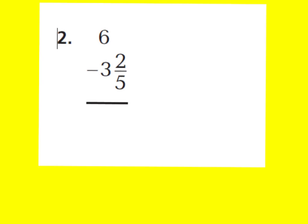To make a fraction, I'm going to take away a whole from my 6 and make it 5 wholes. And then we're going to create a whole to make up for that whole we took away from our 6 wholes. So I would have 5 wholes and 5 fifths. The reason I chose 5 fifths is because my denominator is 5, so to make a whole it would be 5 fifths. Now I can subtract: 5 fifths minus 2 fifths is 3 fifths, and 5 wholes minus 3 wholes is 2 wholes.